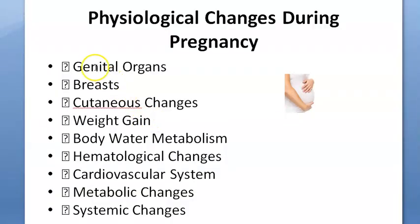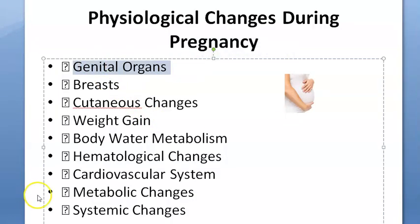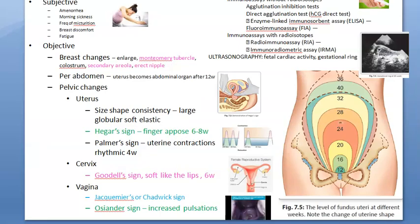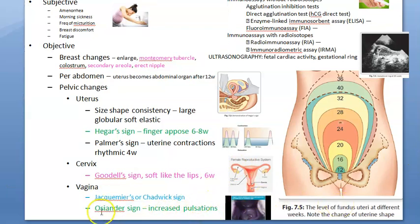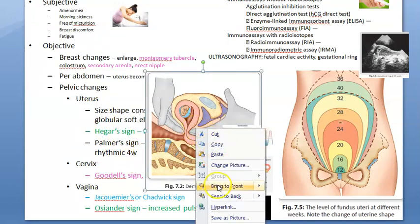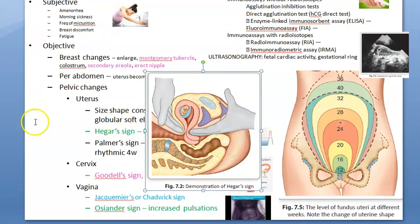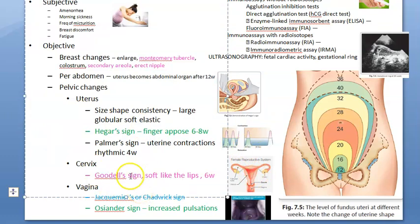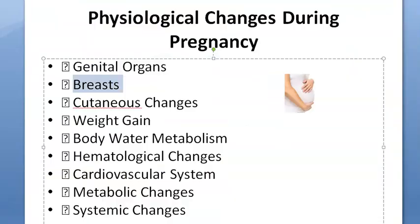Let's start with physiological changes during pregnancy. Regarding the genital organs — vulva and vagina: you have to talk about the Jacquemier or Chadwick sign, which is blue discoloration, and Osiander's sign with increased pulsation. Coming to the uterus, it will become large, globular, soft, and elastic — Hegar's sign is where the fingers will oppose. Coming to the cervix, Goodell's sign means the cervix becomes soft like lips.